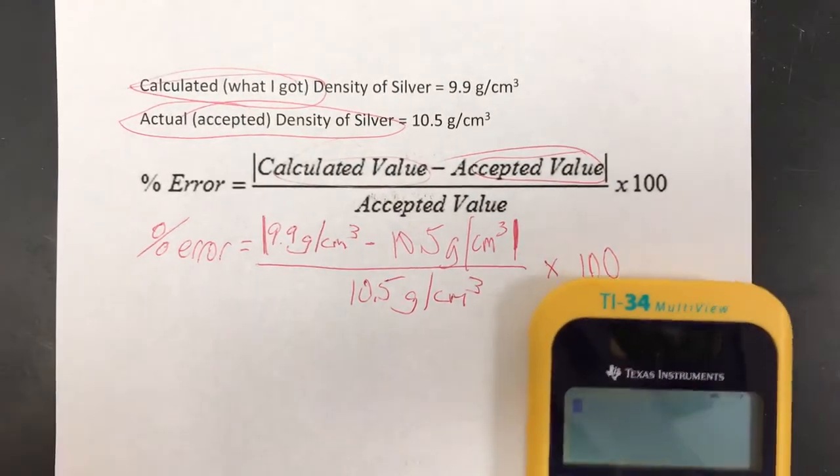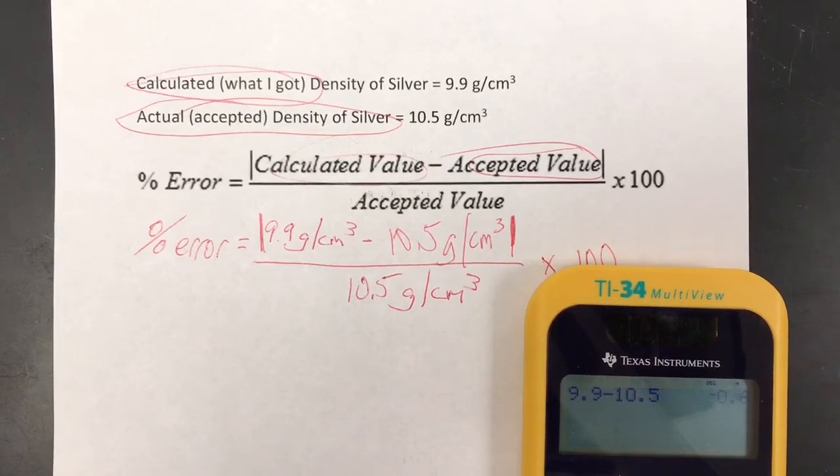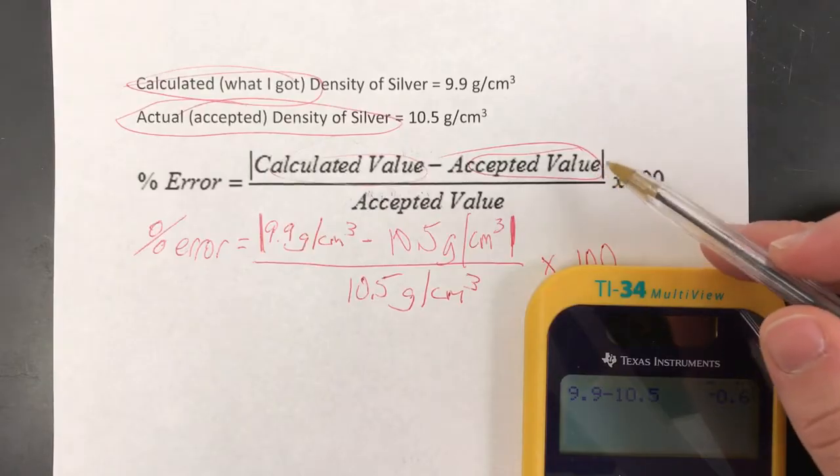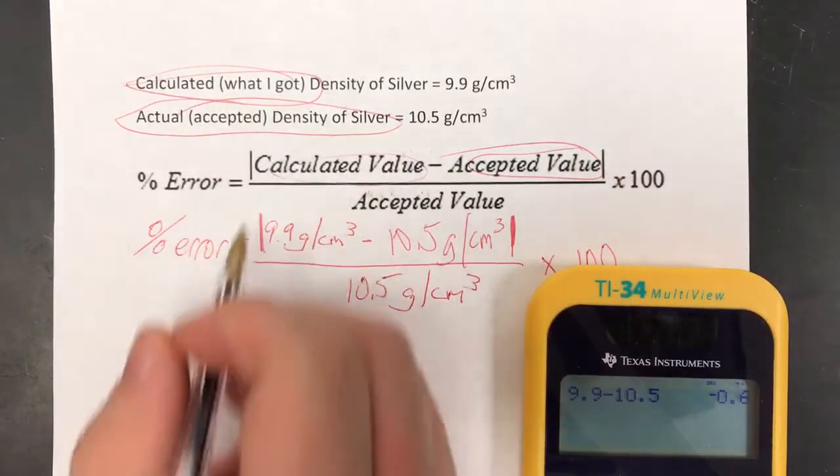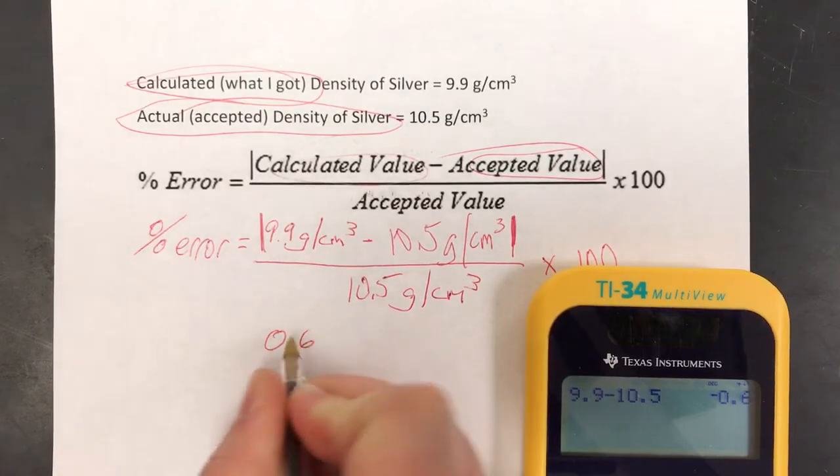So if I go to my calculator, first thing I'm going to do is the top part of the formula, 9.9 minus 10.5 and I get negative 0.6. But again, because it's in absolute value bars here and here, it just ends up being 0.6.